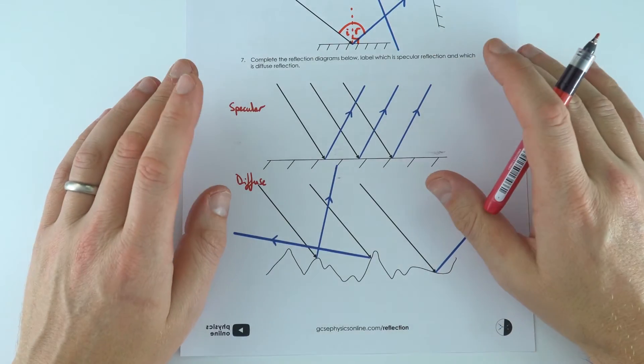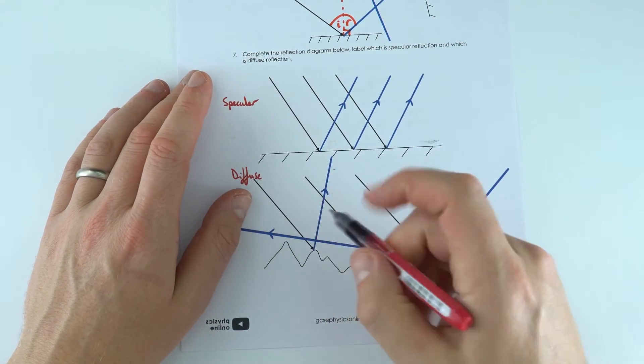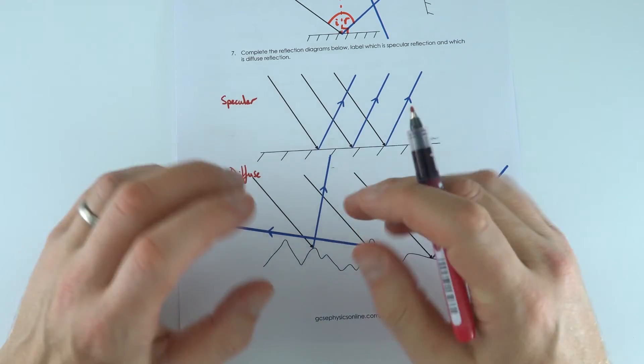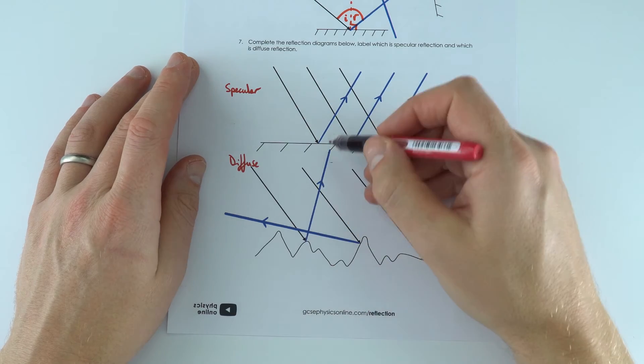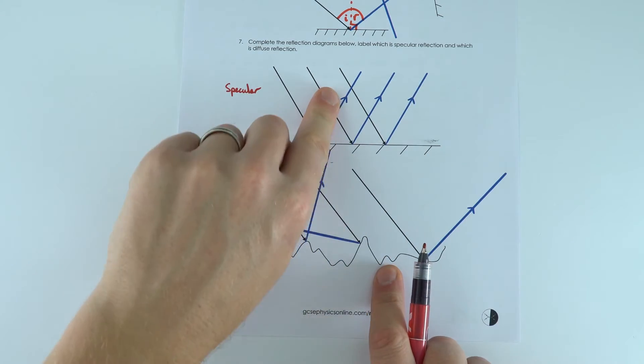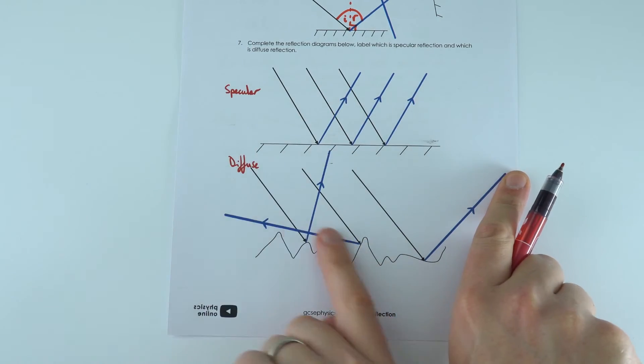However, when you have a diffuse reflection, what happens is that because the surface, if you look at it under a microscope, is actually quite rough, each ray of light is going to bounce off at a different angle. We can see now that some rays go this way, some go that way, and some go that way.